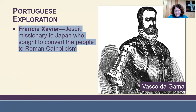In the mid-16th century, the Portuguese were among the first Europeans to land in Japan. A few years later, the Jesuit missionary Francis Xavier arrived in Japan and sought to convert the people to Roman Catholicism.